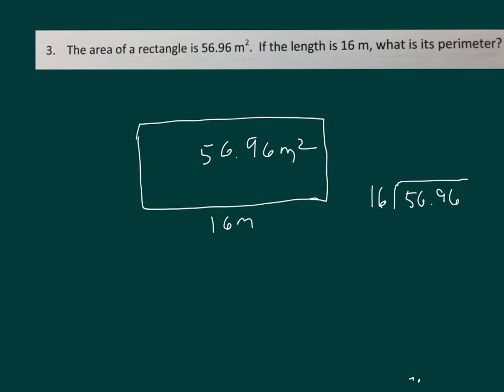16 goes into 56, three whole times. 3 times 16 is 48. And we subtract those two, we get 8. Bring down the 9. 89 divided by 16, I believe it's 5. 5 times 16 is 80. 89 minus 80 is 9. Bring down the 6. And that goes in evenly at 6. 6 times 16 is 96. Subtract it, we get 0. So the width is 3.56 meters.